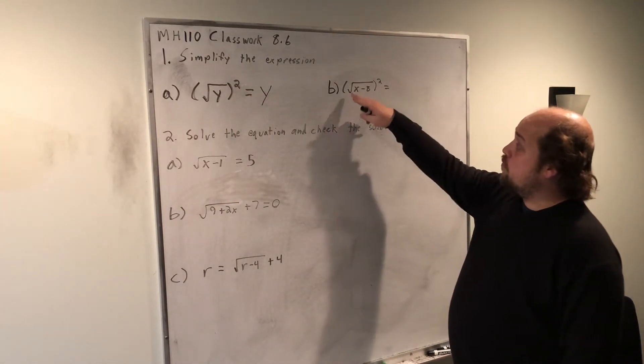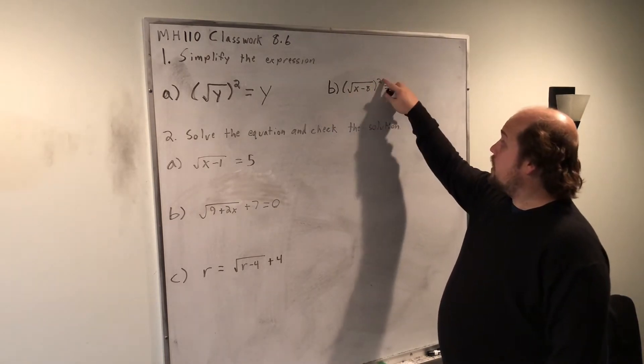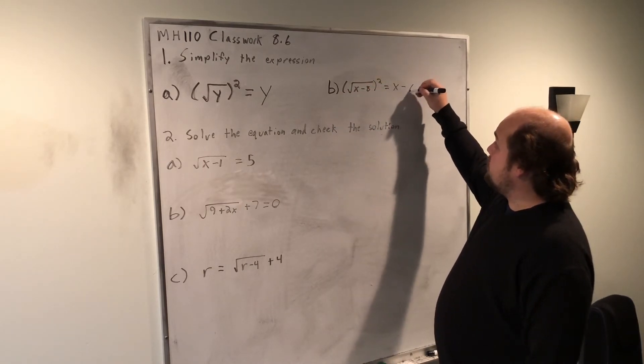Here, when I'm squaring the root of x minus 8, all of x minus 8 is under the root. So when I square the root, the root and the square go away, and the x minus 8 comes outside.